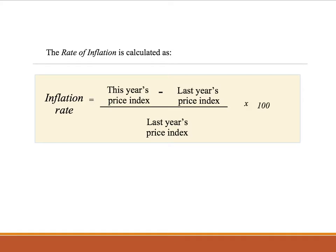A way of calculating inflation is to look at price indexes. You can calculate inflation with a price index using this simple equation shown on the screen: take this year's price index, subtract last year's price index, and divide by last year's price index. Once you get that answer, multiply by 100, and you have a percentage inflation rate. This is essentially a rate of change calculation — how much have prices changed this year compared to last year?